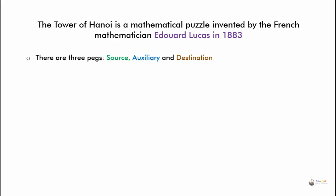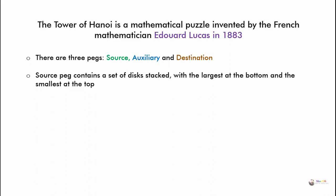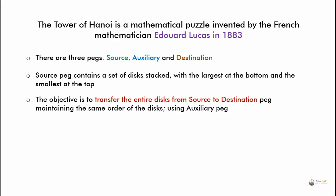In the Tower of Hanoi problem, there are three pegs named Source, Auxiliary, and Destination. The Source peg contains a set of discs stacked with the largest at the bottom and the smallest at the top. The objective is to transfer all discs from the Source to the Destination peg in the same order, using the Auxiliary peg.